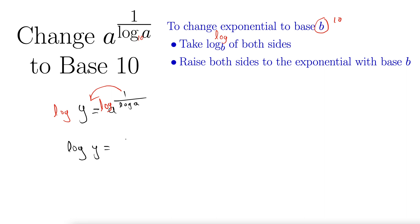Now look at this. This is interesting. 1 over log of a times what's left, log of a. And look at that cancellation. So what we really have is log of y equals 1.